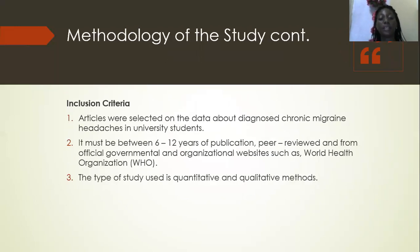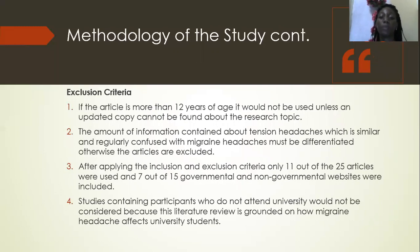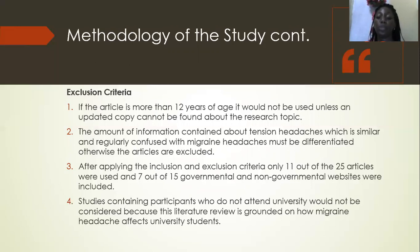Inclusion criteria: articles must be between six to twelve years of publication, and data was selected on diagnosed chronic migraine headaches using quantitative and qualitative study types. Exclusion criteria: articles must not be more than 12 years old; if older and no updated copy is available within the limit, it may be used. Information on tension headaches must be differentiated from migraine headaches. After applying the criteria, only 11 out of 25 articles and 7 out of 15 governmental and non-governmental websites were included. Studies with participants who do not attend university were not considered.